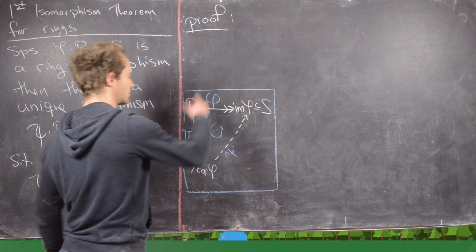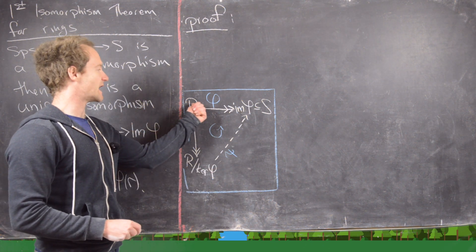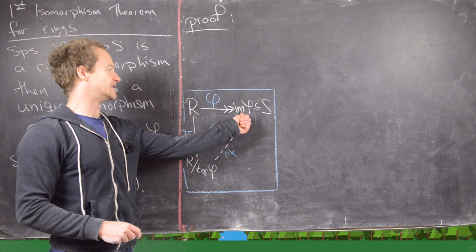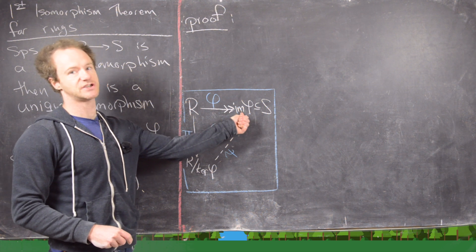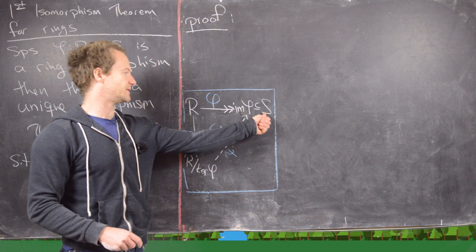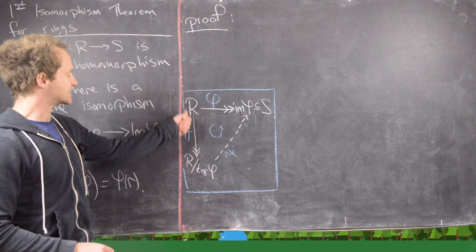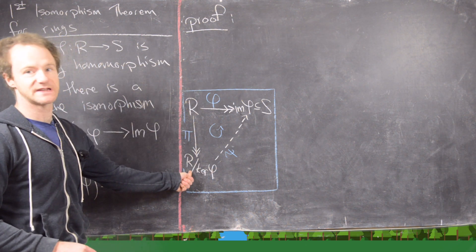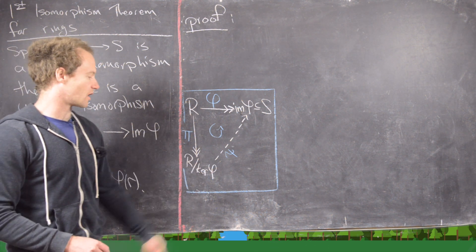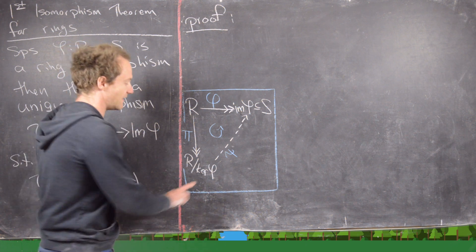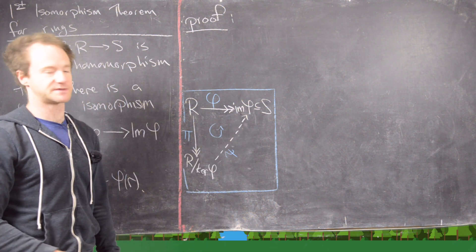This is generally exhibited by the following commutative diagram. Notice we have R maps onto the image of phi — I've put a double arrow here because it's onto the image — and that's going to be a subring of S. Then we have this projection homomorphism down to the quotient, so R gets projected down to R mod kernel of phi. And then this is completed by this unique isomorphism psi.